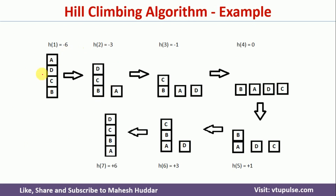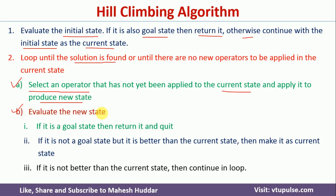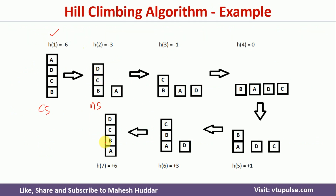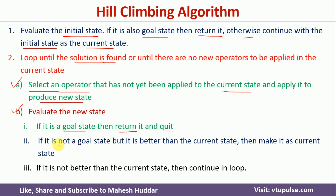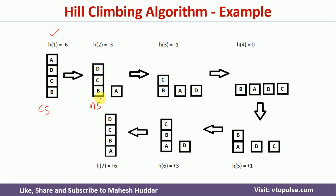From the current state we apply an operator: we bring block A down to the ground. This produces a new state. We then evaluate this new state — if it is the goal state we return it and quit. We check whether this new state matches the goal state, and it does not, so we proceed to compare it with the current state.